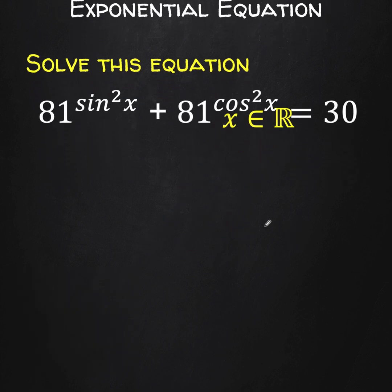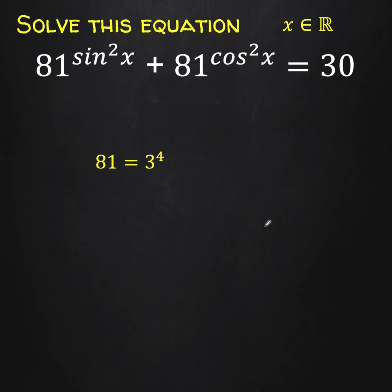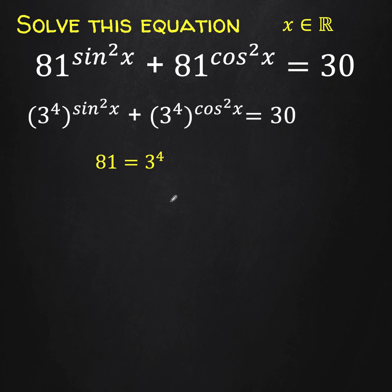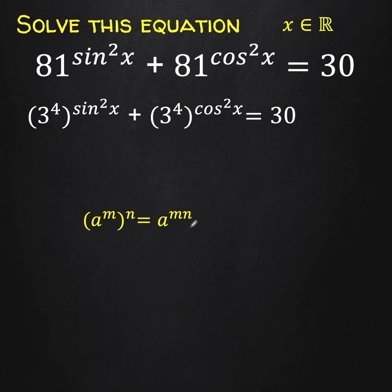Let's solve this problem together. Let's begin by noting that 81 is equal to 3 to the 4th. So let's replace all instances of 81 by 3 to the 4th. We can simplify by applying the property of exponents: an exponential number inside a parenthesis raised to an outside exponent is equivalent to the base raised to the product of the exponents. This 4 is multiplied: the exponent times that exponent equals the simplified result.